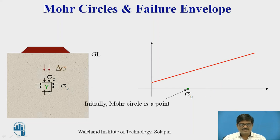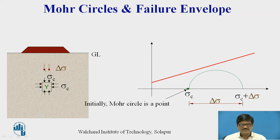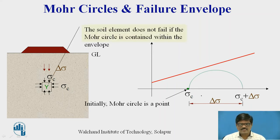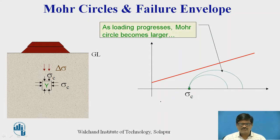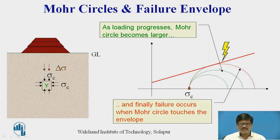In real life, initially there exist stresses in horizontal and vertical directions. When a structure is built on the soil mass, additional vertical pressure is exerted. The total vertical stress becomes sigma c plus delta sigma, and sigma 3 is the confining pressure sigma c. This Mohr Circle has not touched the failure envelope, so failure has not taken place. As the additional load continues, the Mohr Circle diameter keeps increasing until the Mohr Circle touches the failure envelope, indicating that the soil sample has failed at that particular value of vertical stress.